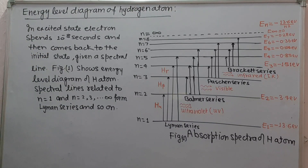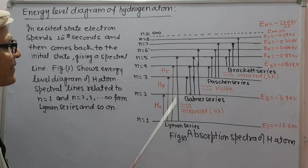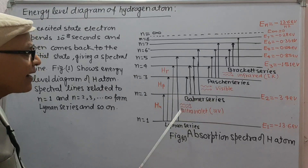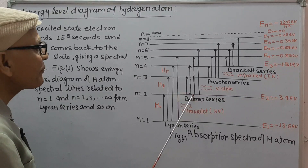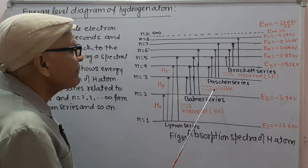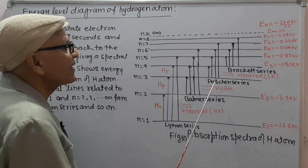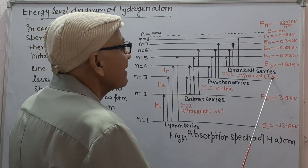Next, we take the energy level diagram of hydrogen atom. In the excited state, an electron spends 10⁻⁸ seconds and then comes back to the initial state giving a spectral line. Spectral lines related to n = 1 and transitions from n = 2, 3, and so on form the Lyman series, which lies in the ultraviolet region. The spectral lines from n = 2 to upper orbits form the Balmer series, which lies in the visible region. Similarly, the Paschen series lies in the infrared region.